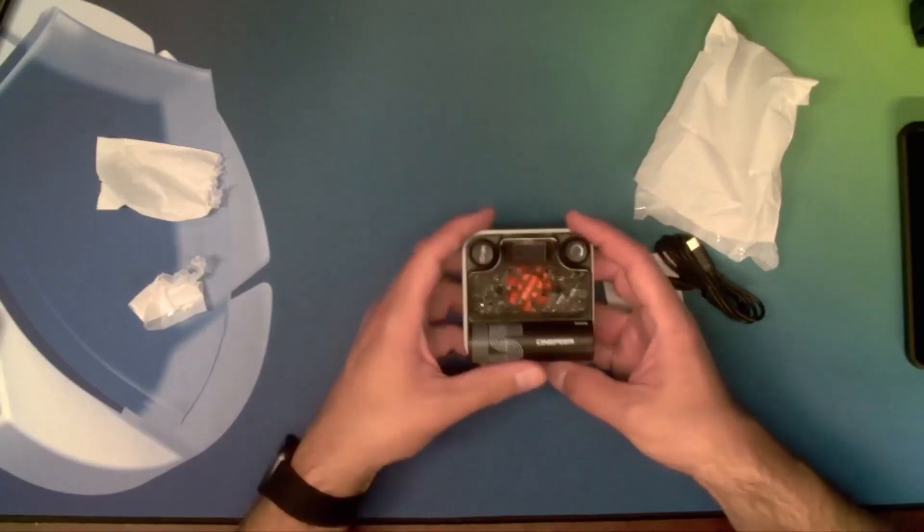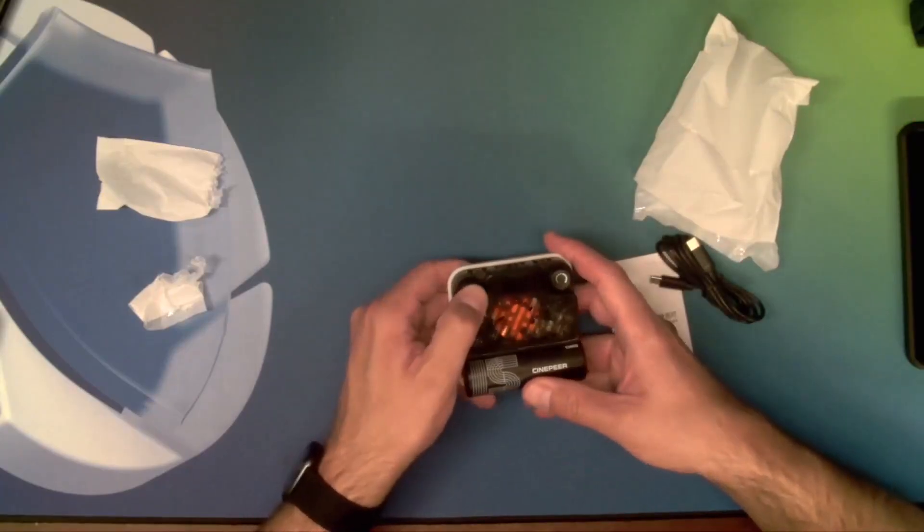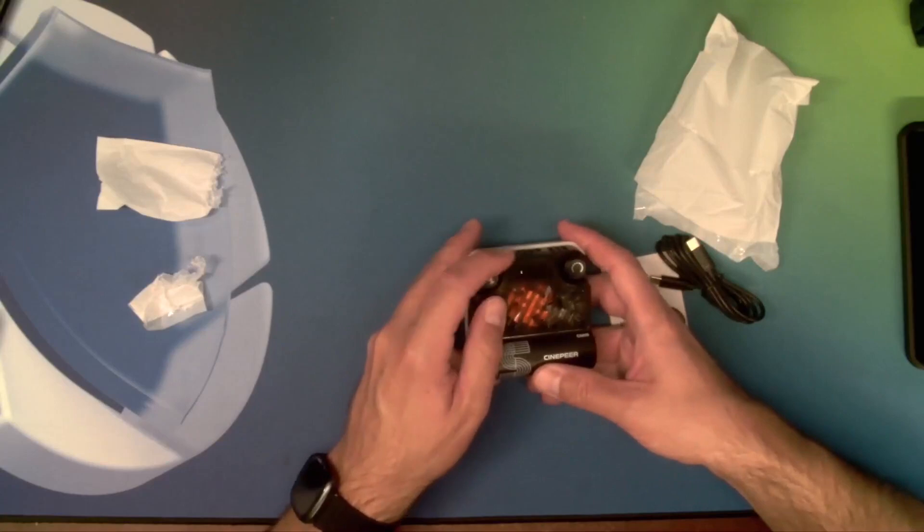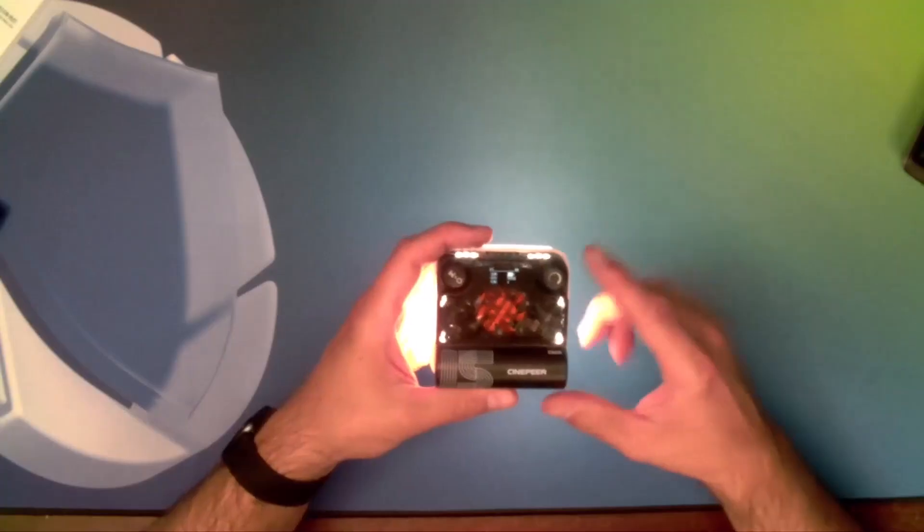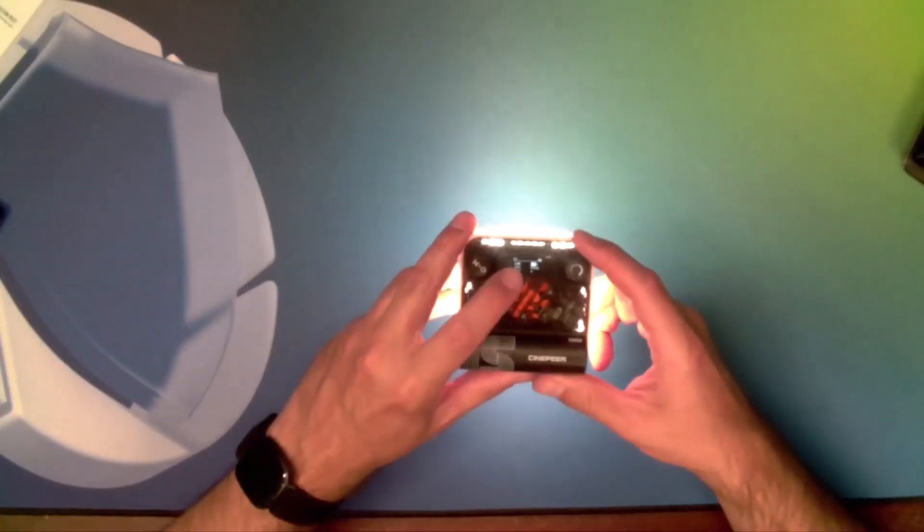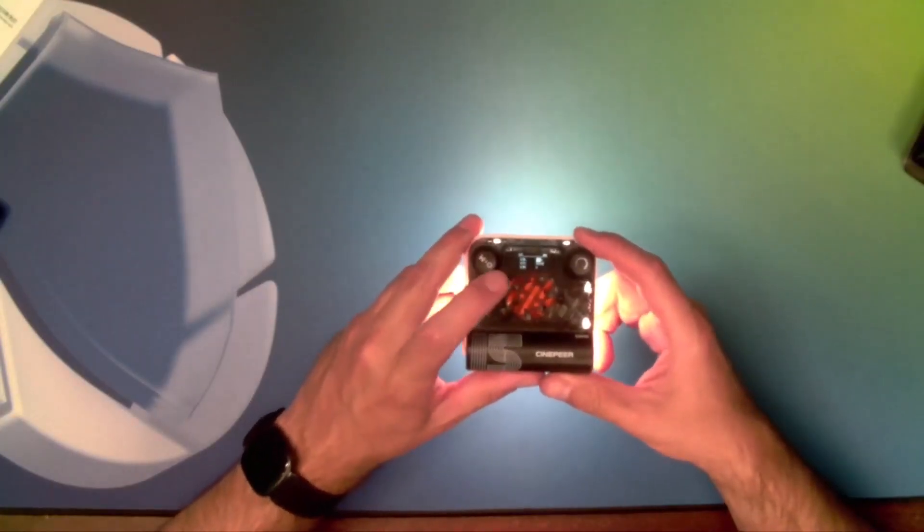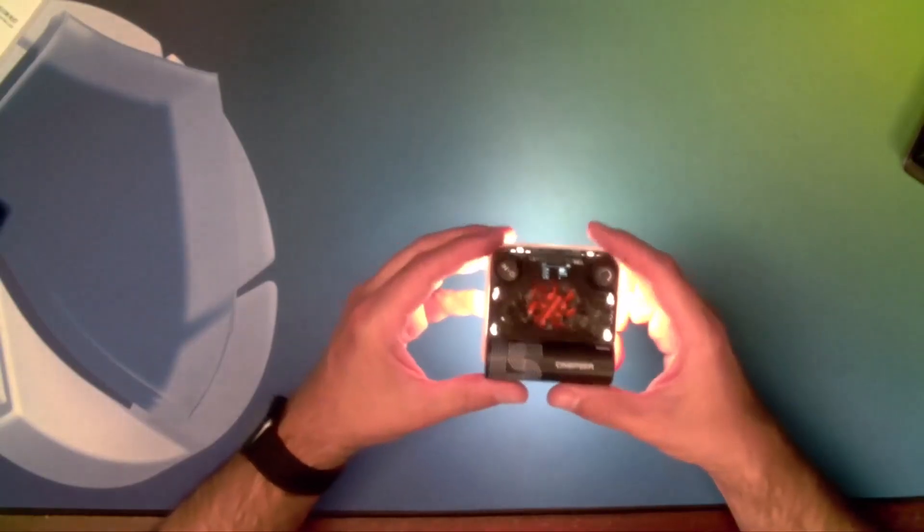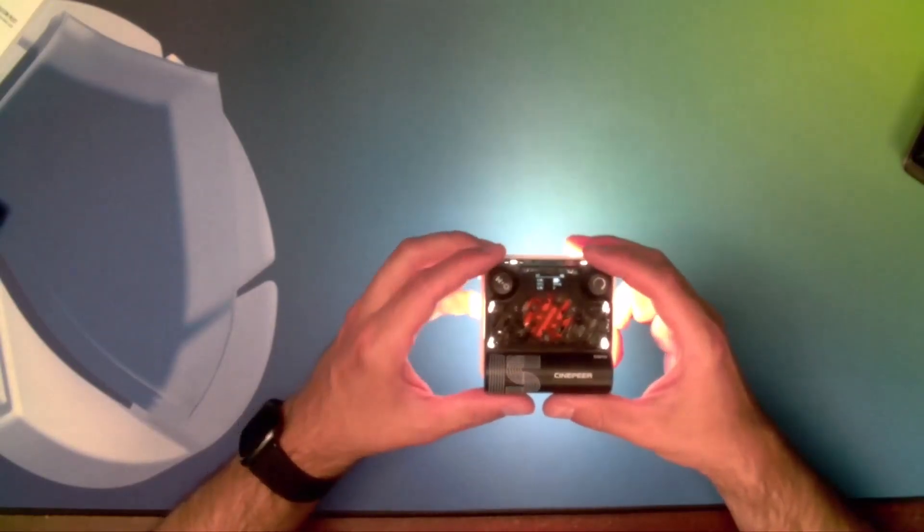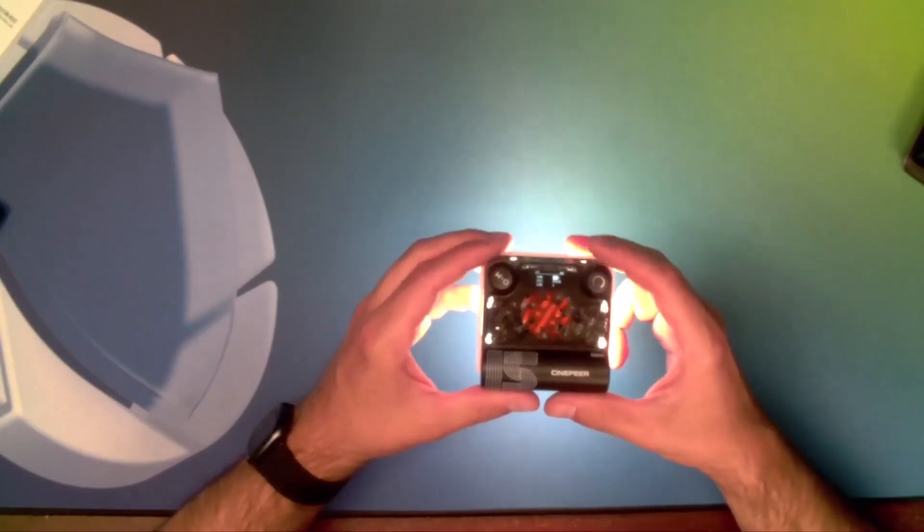To turn the unit on, there's a power button on the left that says rotate to turn on. We're going to spin it and now it's turned on. The integrated screen displays key information: your battery level, dim which is your brightness setting, CCT for color temperature, and G/M which is your magenta-green adjustment.